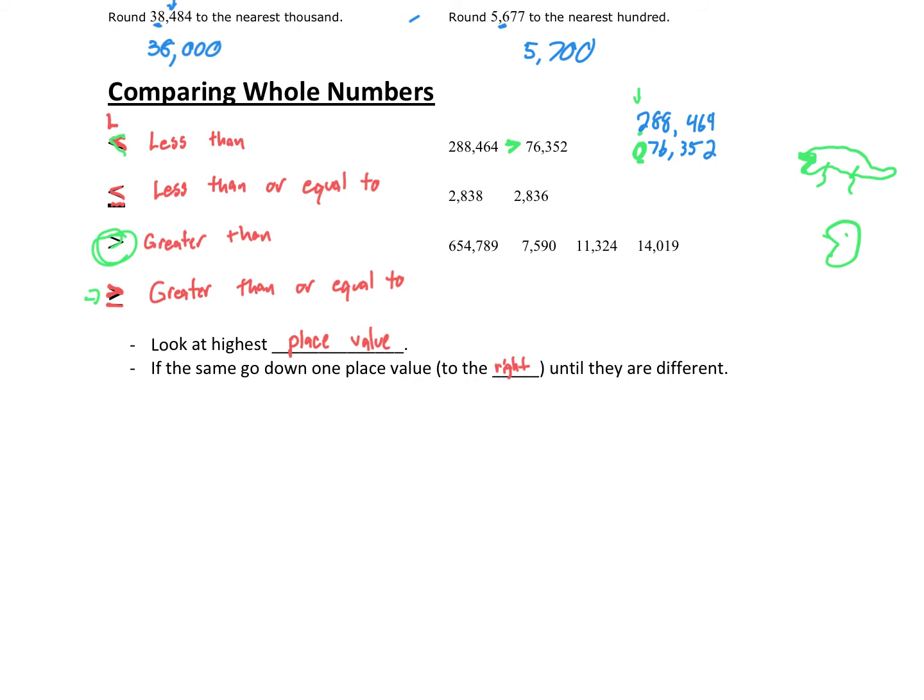Looking at this next one. 2838 or 2836. Let's line them up vertical just to practice this skill. I know you guys can do this one in your head, but I'm all about the fundamentals. You shoot layups before you shoot three pointers. So look at the highest place value. They're both twos. They're the same. Look at the next one to the right. They're both eights. Get rid of those. Then they're all both threes. So now we're just comparing the eight or the six. The eight is bigger. So our Pac-Man or alligator eats the bigger. 2838 is greater than 2836.